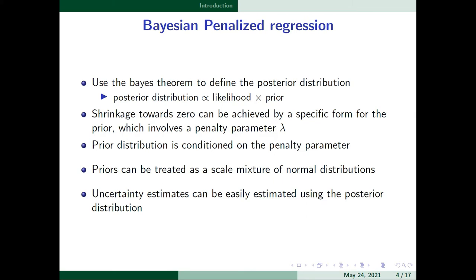Next I will talk about Bayesian penalization regression. Like all Bayesian methodologies, we need to define the posterior distribution using Bayes' theorem — the posterior is proportional to the likelihood function times the prior distribution. Under Bayesian penalization regression, shrinkage towards zero is achieved using a specific form of prior distribution that involves the penalty parameter lambda, giving a conditional prior distribution conditioned on lambda.